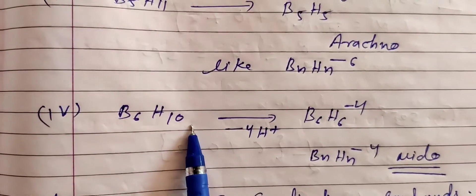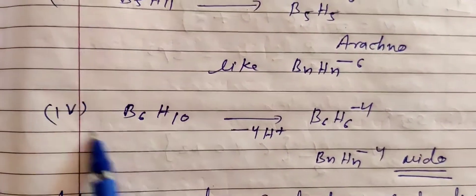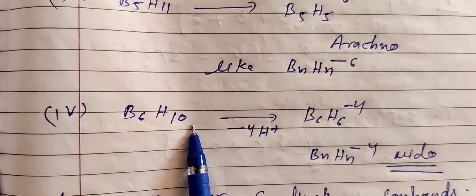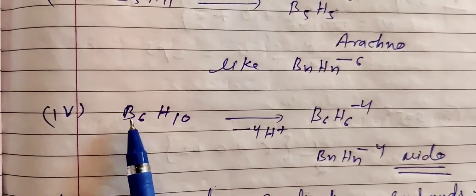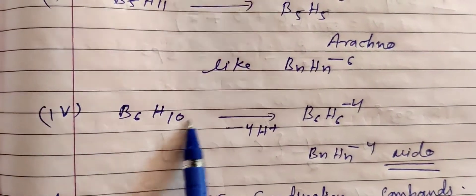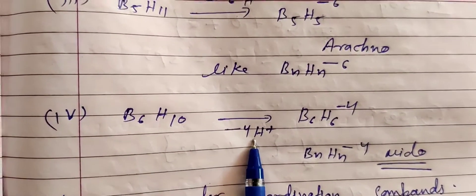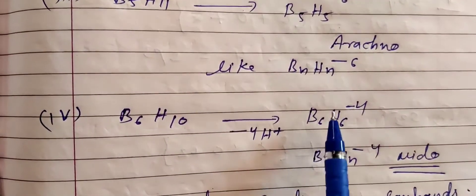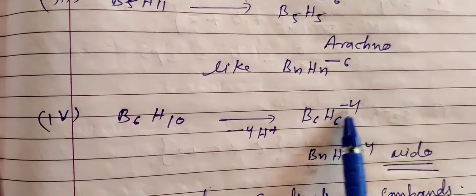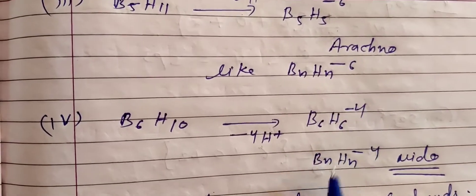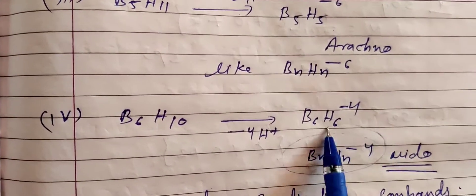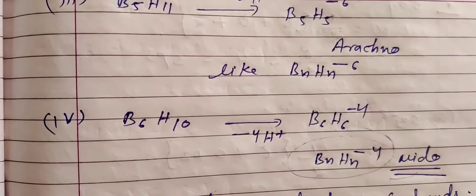Example: B6H10. There are 6 boron atoms, so 6 hydrogens should match; extra hydrogens are 4. Remove 4 H⁺, giving minus 4 charge, so B6H6⁴⁻. This matches BnHn₋₄, so this is a nido type borane structure.